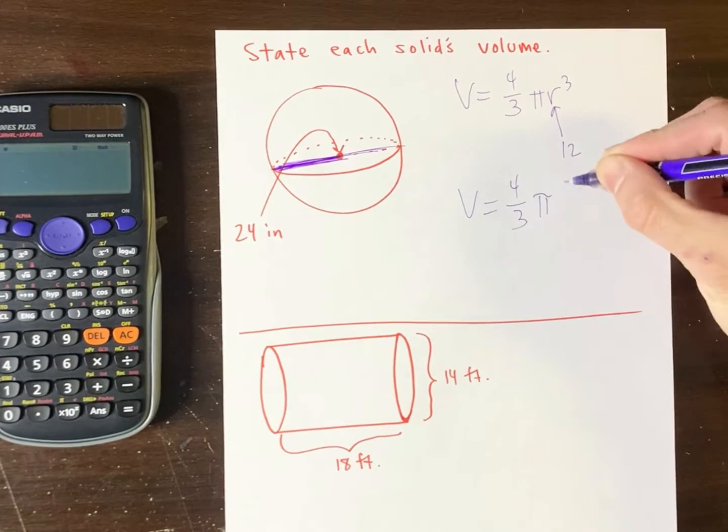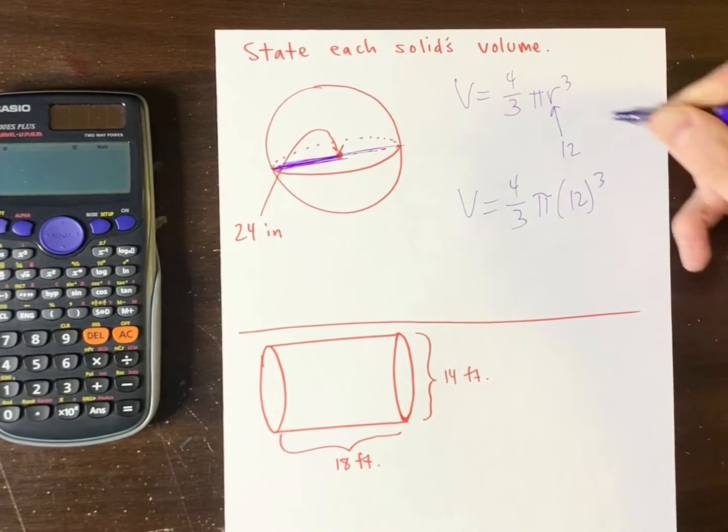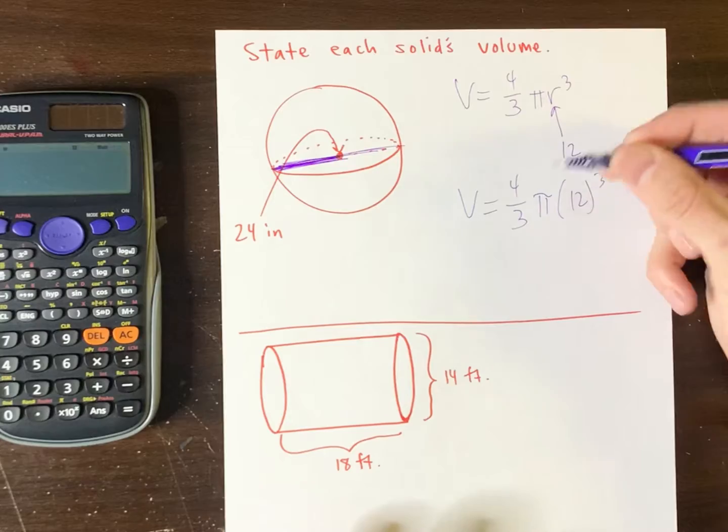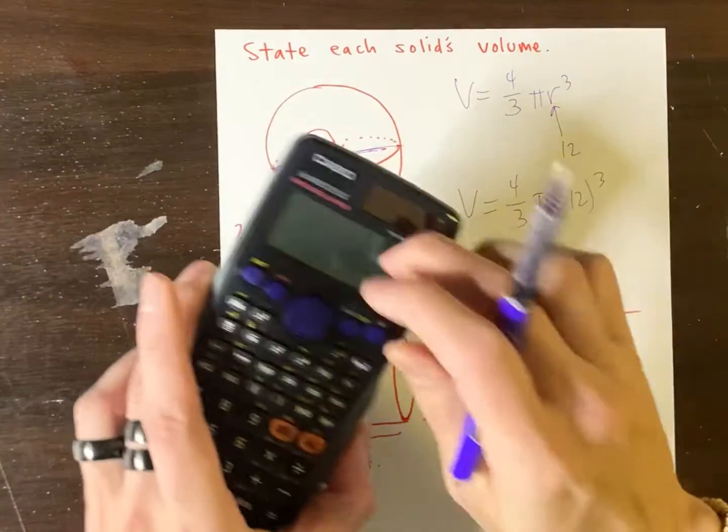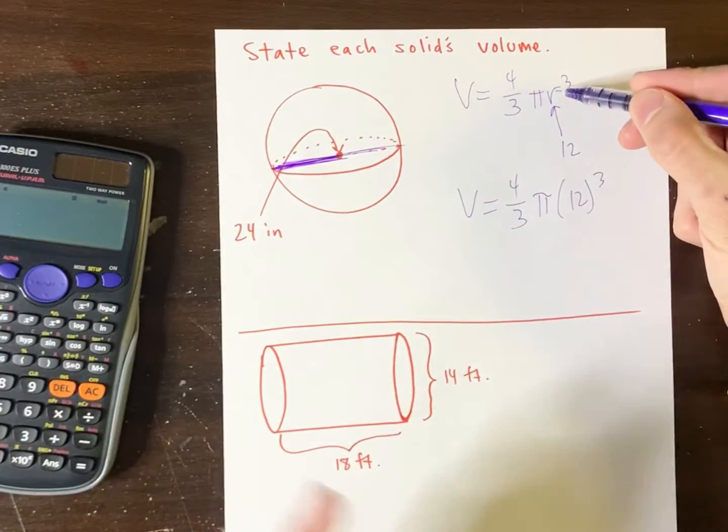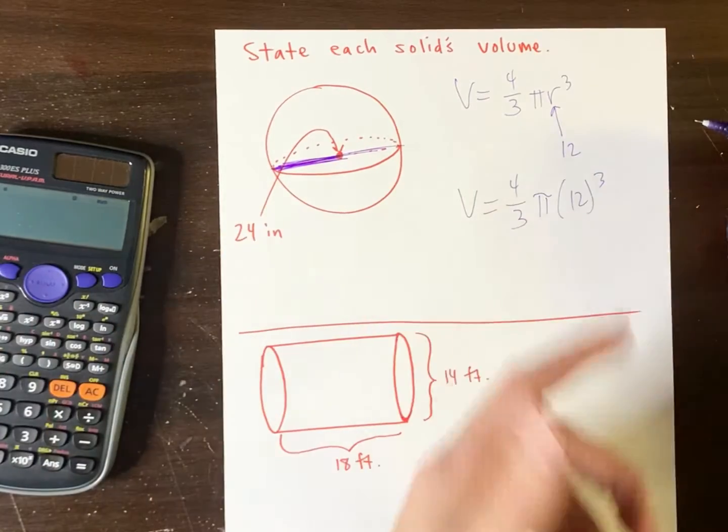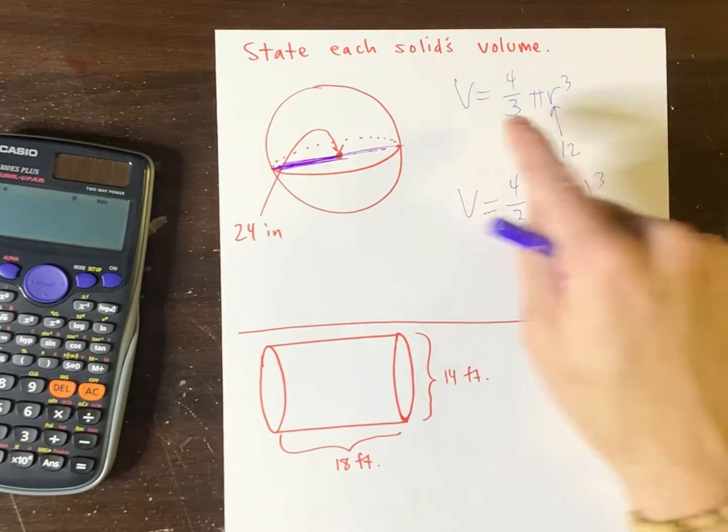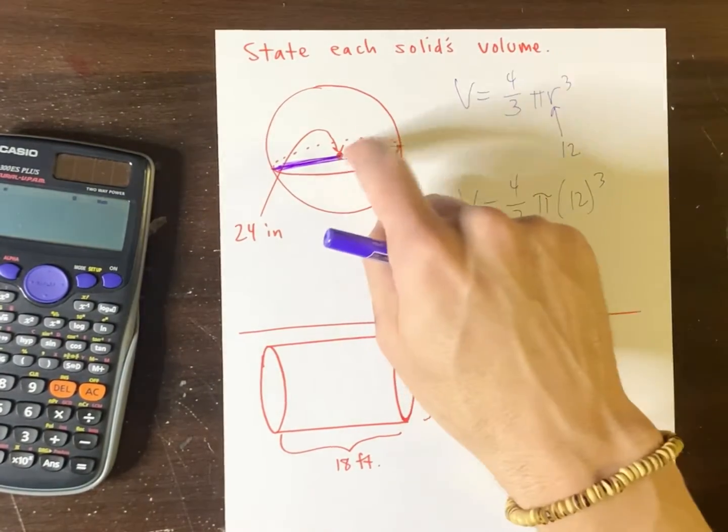And so now let's update our formula. So we have four-thirds. That's just part of the formula. Pi is just the number on your calculator. r, the radius, we had to find that. We did. It's 12. And 3 is just 3. You see, that's always the formula for the volume of a sphere.